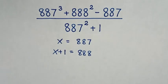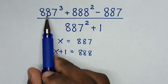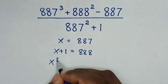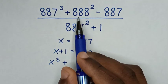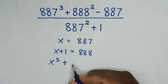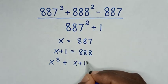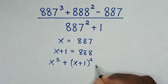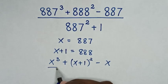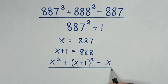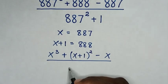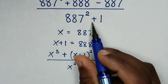Then in the next step, from here 887 is x, so it becomes x cubed. Then plus — in here 888 is x plus 1, so it becomes (x+1) squared. Then minus 887, which is x, over 887, which is x squared, then plus 1.